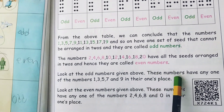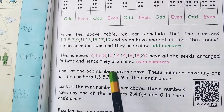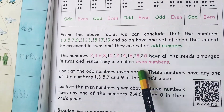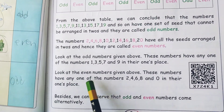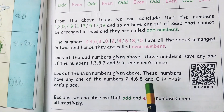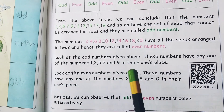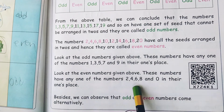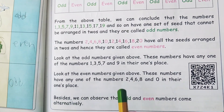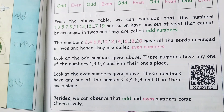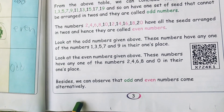Look at the odd numbers — these numbers have any one of the digits 1, 3, 5, 7, or 9 in their ones place. Look at the even numbers — these numbers have any one of the digits 2, 4, 6, 8, or 0 in their ones place. We can also observe that odd and even numbers come alternately.